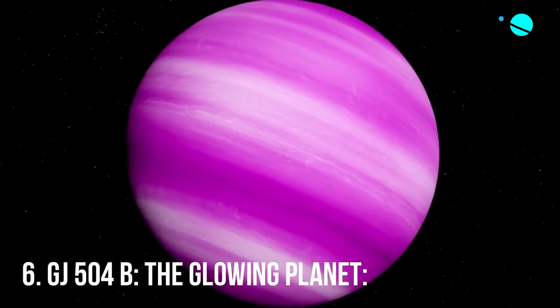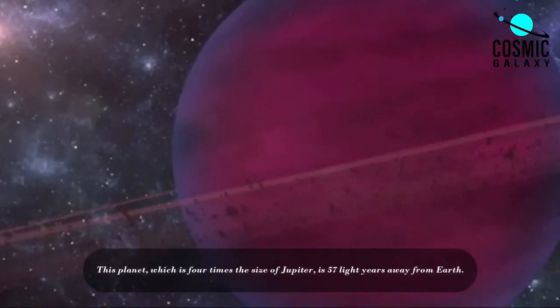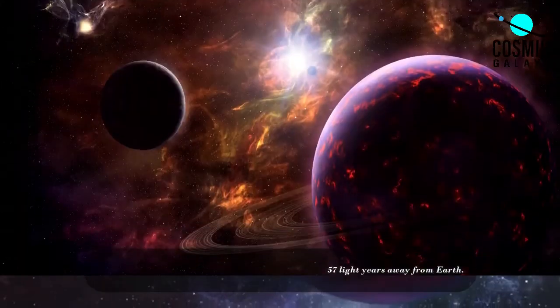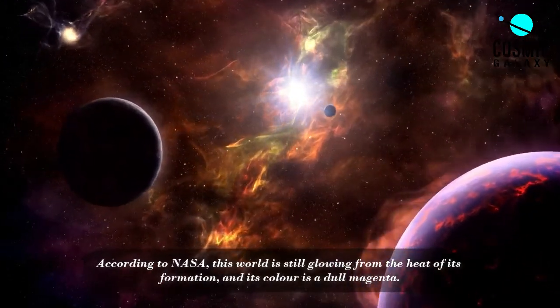Number 6, GJ-504b, The Glowing Planet. This planet, which is four times the size of Jupiter, is 57 light-years away from Earth. According to NASA, this world is still glowing from the heat of its formation, and its color is a dull magenta.